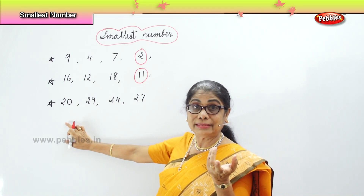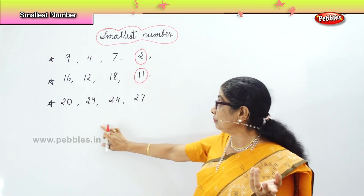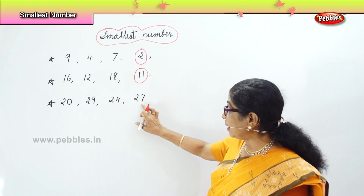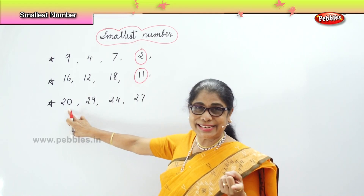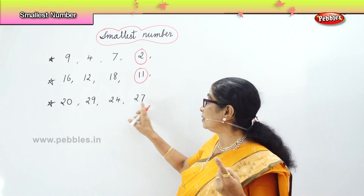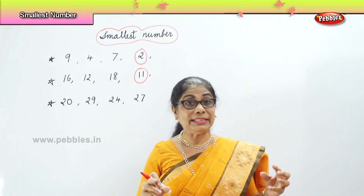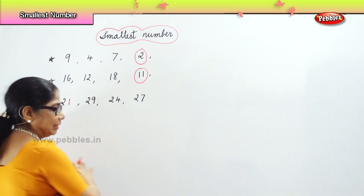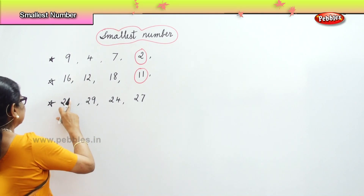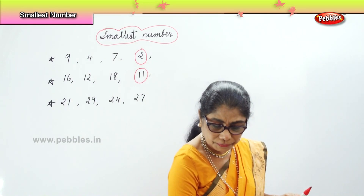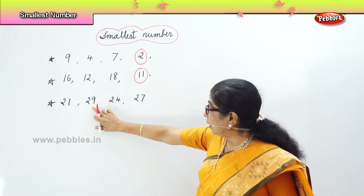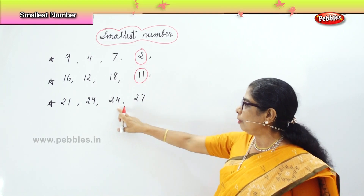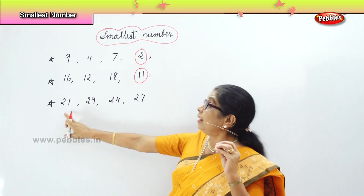Look at the second numbers: you have 0 here, 9 here, 4 here, 7 here. So you have 24, 27, 29. But look here — 20. With 9, 4, and 7 in the second place, definitely 20 is smallest because its second digit is 0. You could also have 21. In the second place you have 1, 9, 4, and 7. Definitely 9 is big, 7 is big, 4 is big — 1 is the least. So, 21 is the smallest.